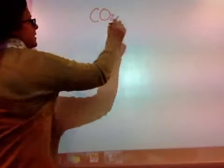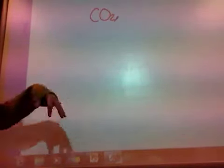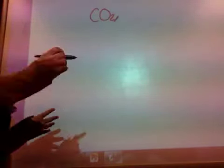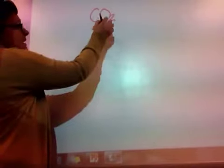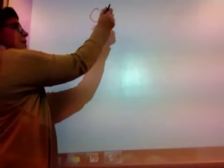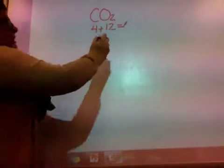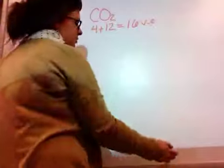Let's look at letter D — CO₂, carbon dioxide. First thing we need to do is check how many valence electrons the entire compound has. Carbon has 4, and oxygen has 6 but there are 2 of them, so that's really 12. So overall, carbon dioxide gives us 16 valence electrons.